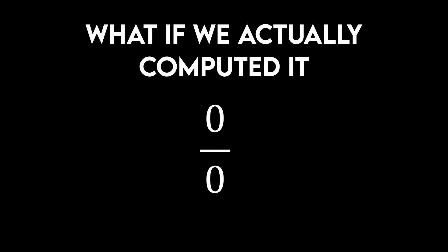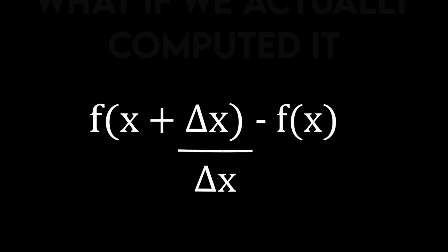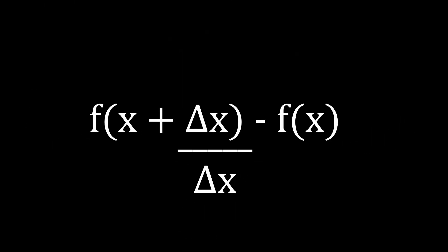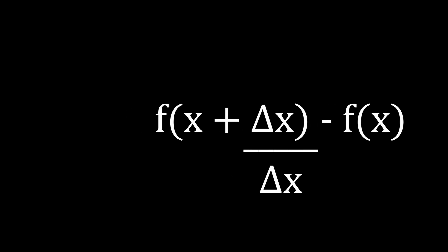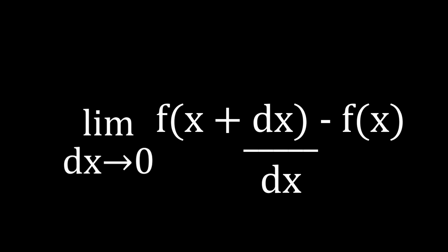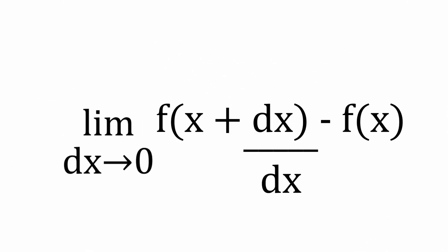But remember the last video? We actually now have the ability to complete this division. We can take the limit of this gradient formula as delta x approaches zero. To signify this leap from displacement into calculus, we replace the delta x with dx. We did it. We found the formula for the gradient of a curve.